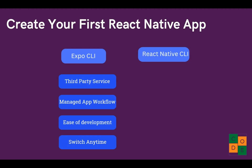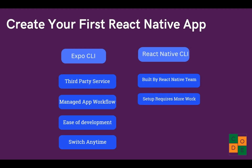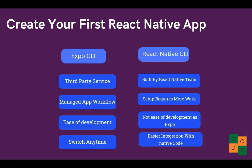With React Native CLI, you don't have the option to switch back to Expo. The React Native CLI is built by the React Native team and community, and was the only option when React Native first launched. It requires more work to set up the development environment compared to Expo, but it offers easier integration with native code like Java, Kotlin, Swift, or Objective-C — beneficial if you're mixing JavaScript with native development.